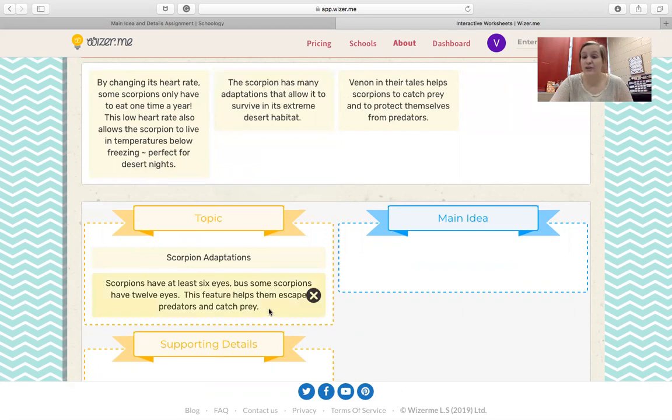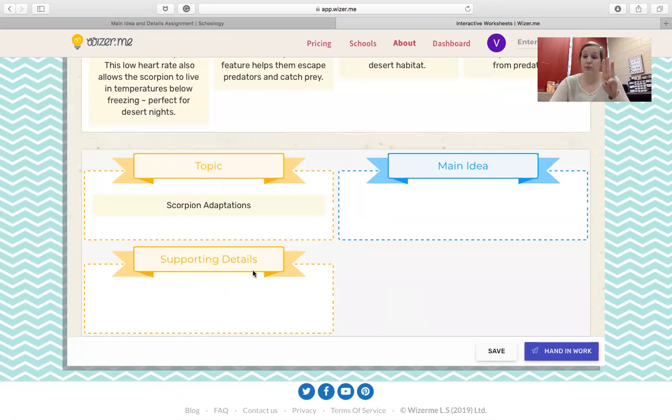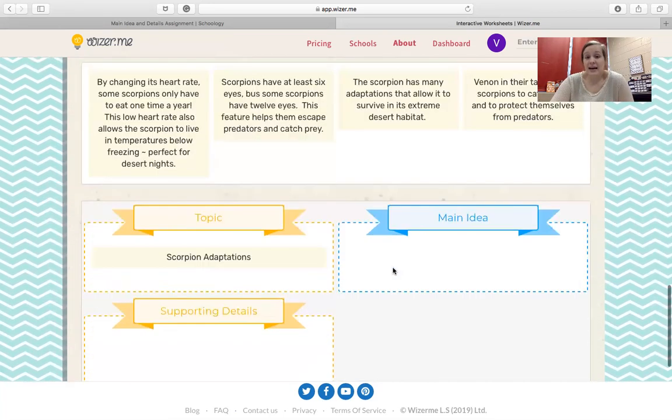But guess what? I told you you only have one topic. So should there be more than one in this topic? No, there shouldn't. And you shouldn't have more than one in your main idea either. And then you're going to have three supporting details. A way to think about it is you already know your topic's only two words, so that's an easy one.